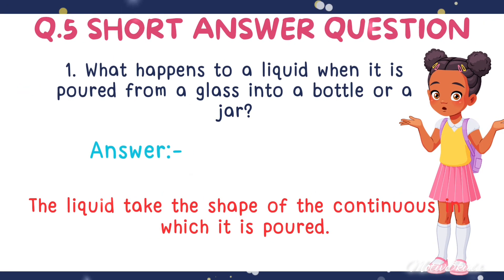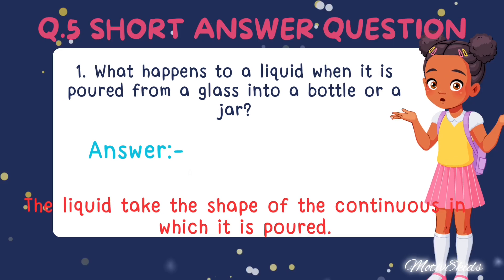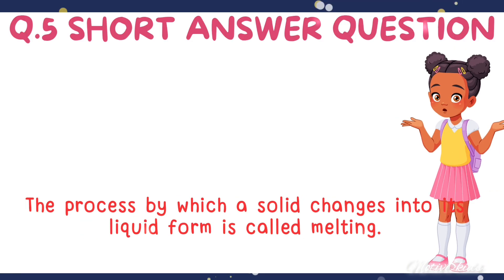Question number five: short answer questions. Question one — what happens to a liquid when it is poured from a glass into a bottle or a jar? Answer: the liquid takes the shape of the container into which it is poured.